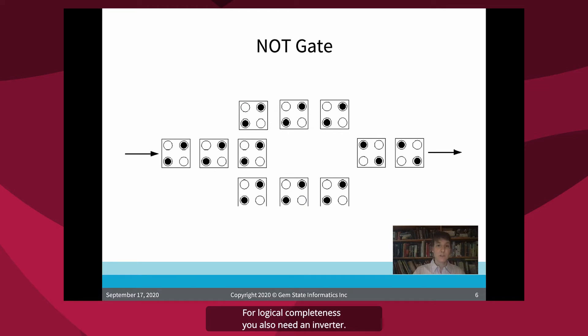For logical completeness, you also need an inverter. You need a NOT gate. And you do this by the placement of the gates of the QCA cells.